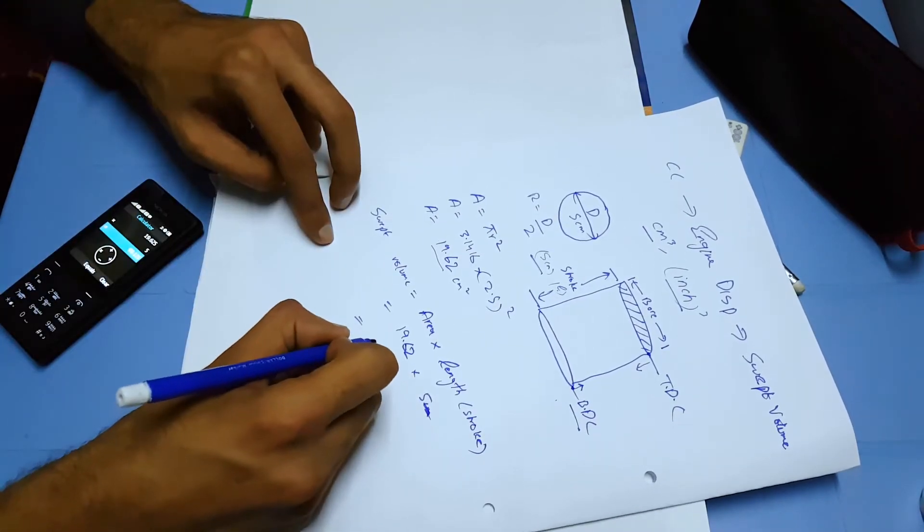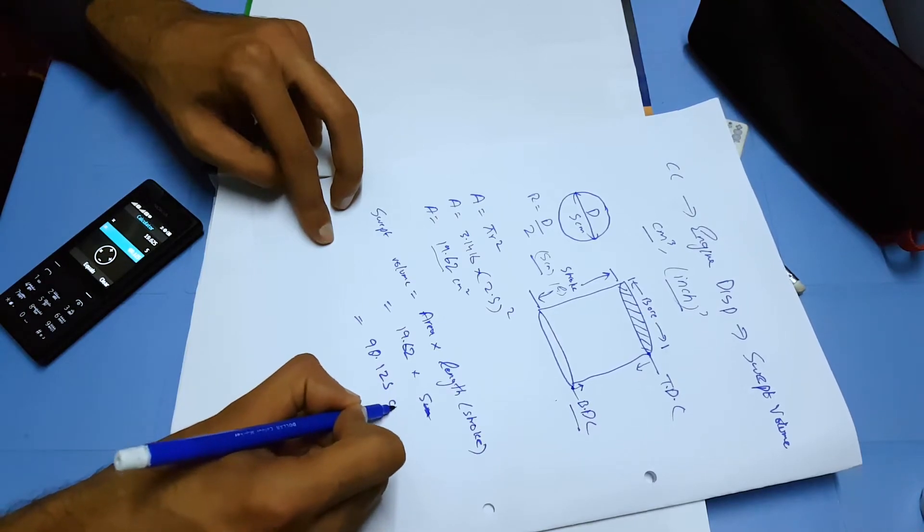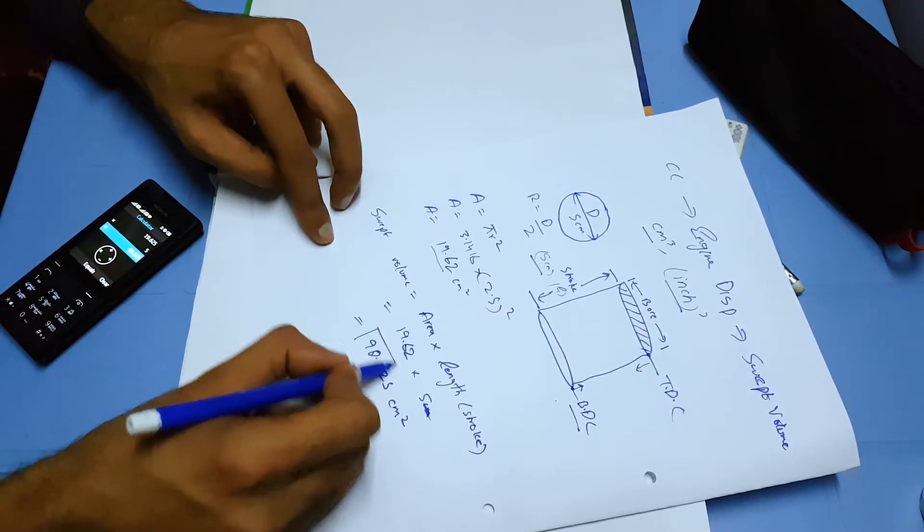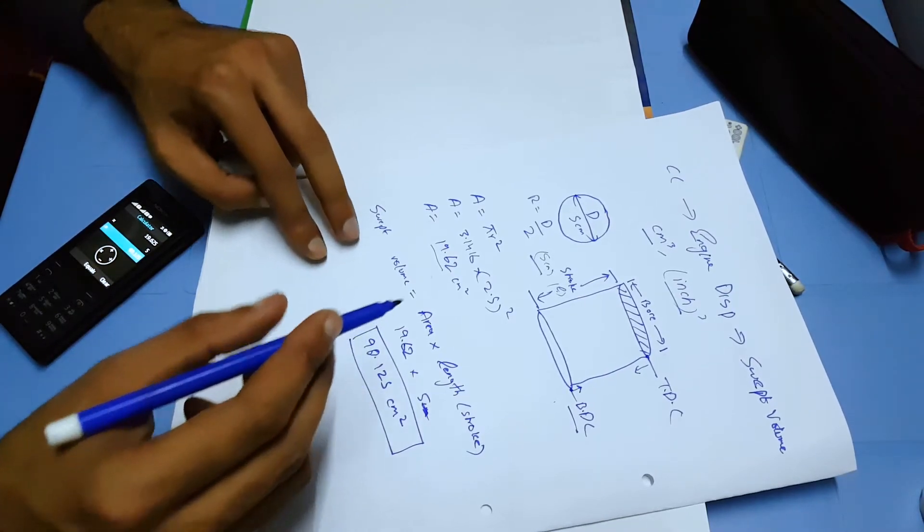This gives you 98.125 cubic centimeters, and this is your engine CC. In this case we have assumed that we have just one cylinder in the engine.